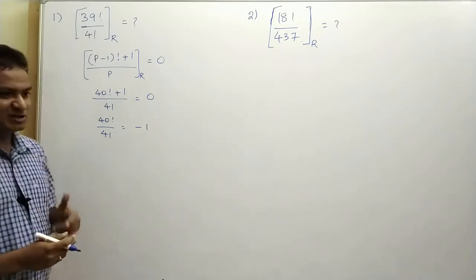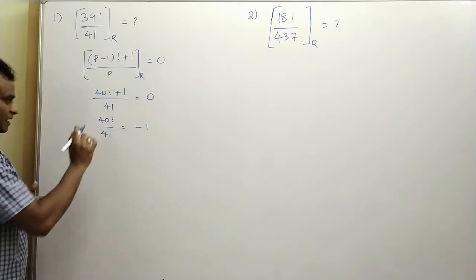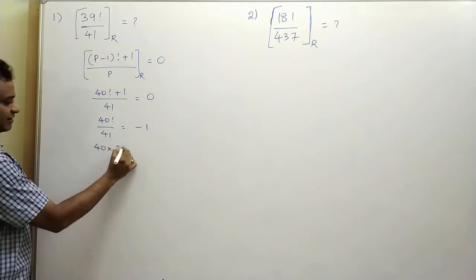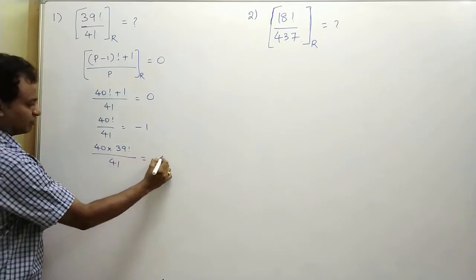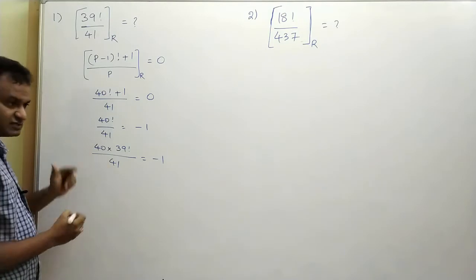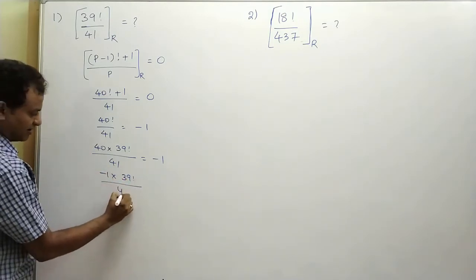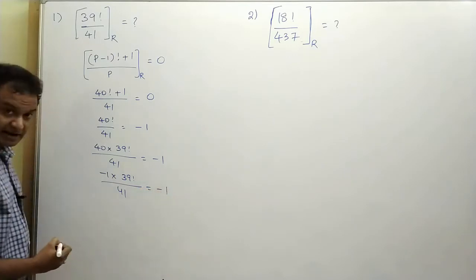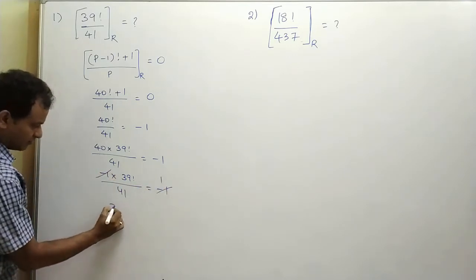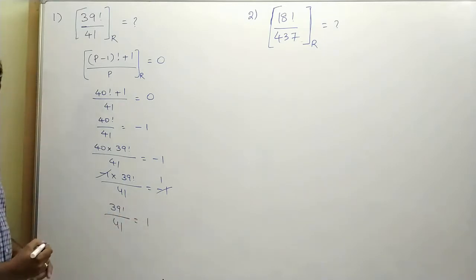Please refer to the video on the negative remainder theorem. Now 40 factorial can be written as 40 into 39 factorial, whole divided by 41, which equals minus 1. Then 40 divided by 41 will give you minus 1 as a remainder. So minus 1 into 39 factorial, whole divided by 41, equals minus 1 as a remainder. Now minus 1 goes one time here. Therefore, 39 factorial when divided by 41, the remainder is equal to 1.